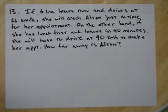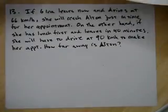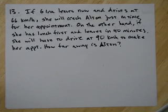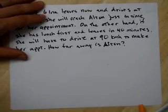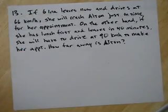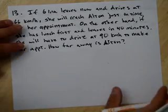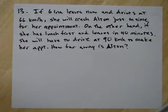So there's two more problems real quick. Here we go. Gina leaves now and drives at 66 kilometers an hour. She'll reach Alton just in time for appointment. On the other hand, if she has lunch first and then leaves in 40 minutes, she'll have to drive at 90 kilometers an hour to make her appointment. How far is this town, Alton? Well, that's kind of a tough problem.